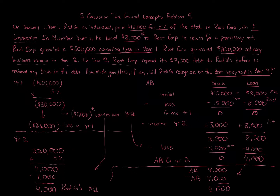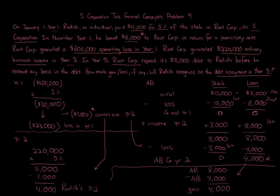The corporation is paying back what it owes. When it pays back all $8,000 and your basis in the note is $4,000, you take the amount received, subtract the basis, and the difference is a gain. The problem states no basis was restored in Year 3 before repayment, so the basis stays at $4,000. That means we have a $4,000 gain at the end of Year 3.